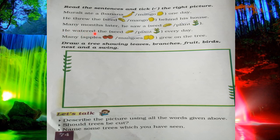Next: 'Many apples or mangoes grow on the tree?' Class, tell me — what comes on the tree, mangoes or apples? Mangoes — that was a mango tree. So here you will take mangoes.